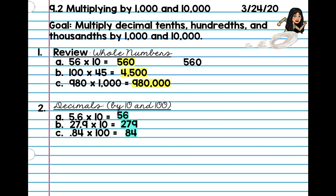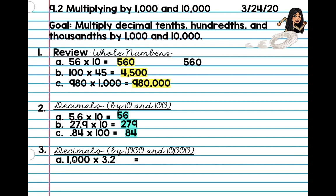Alright, so everyone's pretty familiar with multiplying by 10 and 100. So you are going to do the same exact thing now, but instead of 10 and 100, you're just going to multiply by 1,000 and 10,000. Skip a line — we're at number 3. Letter A is 1,000 times 3.2. You're going to take your number and count the zeros. We have 1, 2, 3 zeros. I'm going to move my decimal over to the right 3 times: 1, 2, and a zero goes there, 3. So now our answer is 3,200, because we moved 1, 2, 3 places. My decimal place is right here to the right of the number.